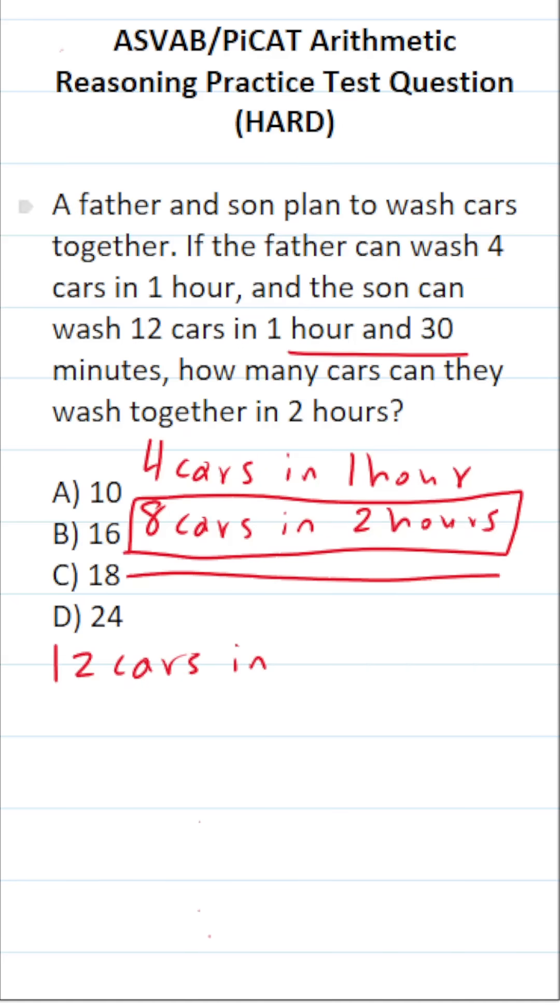One hour and 30 minutes is the same thing as 60 minutes—there are 60 minutes in an hour—plus 30 minutes. So an hour and 30 minutes is the same thing as 90 minutes.